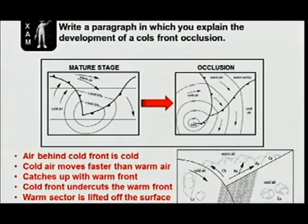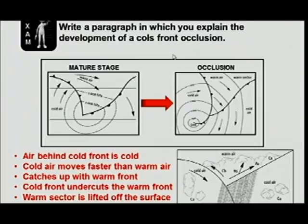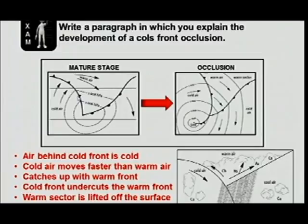This question appeared in last year's exam and it's basically a direct question: 'Write a paragraph in which you explain the development of a cold-front occlusion.' If they ask you to explain the development of a cold-front occlusion, you must know that the occlusion follows the mature stage. In other words, they are asking you to describe the stage as it moves from the mature stage over towards the occlusion stage.